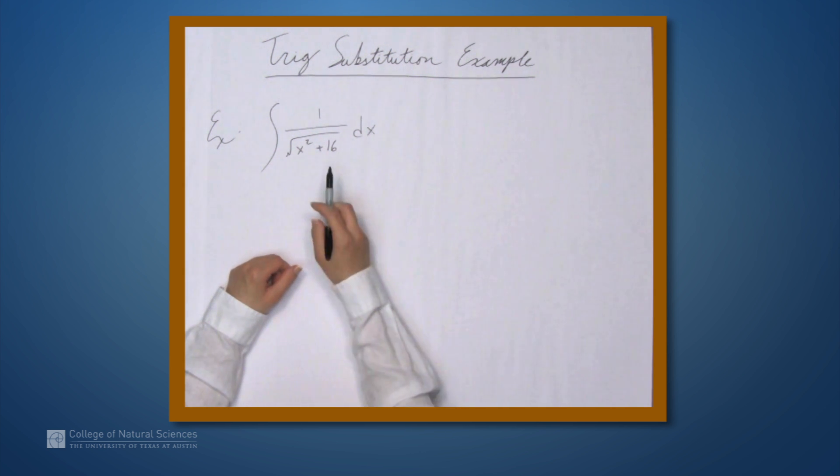So we're here at the example table, and in this video we're going to look at a trig substitution example. In particular, we're going to try to integrate 1 over the square root of x squared plus 16.